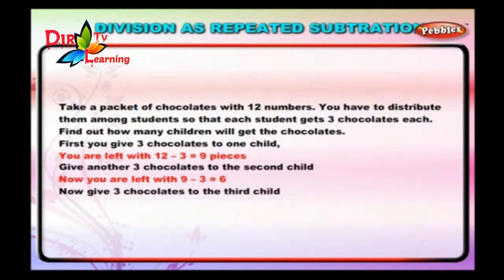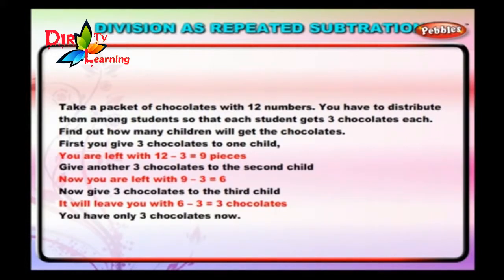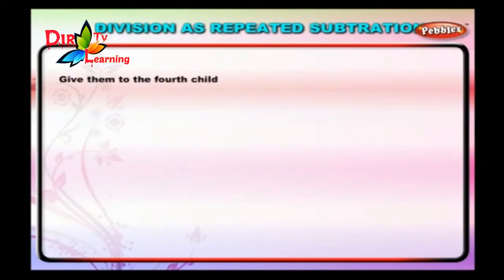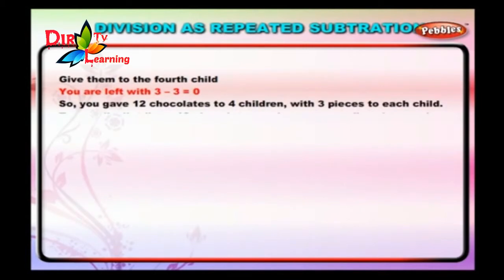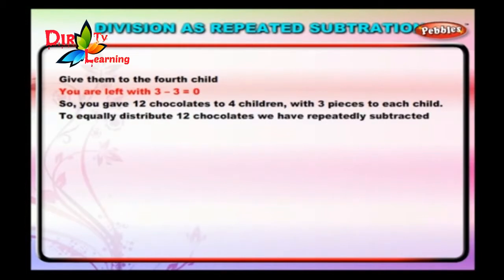Give 3 chocolates to the third child. It will leave you with 6 minus 3, which is equal to 3 chocolates. You have only 3 chocolates now. Give them to the fourth child. You are left with 3 minus 3, which is equal to zero. So you gave 12 chocolates to 4 children with 3 pieces to each child.